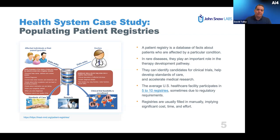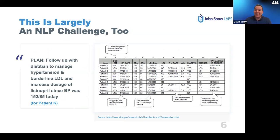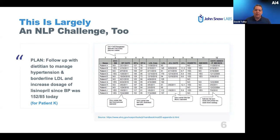This is largely an NLP challenge. Even for clinically simple things — blood pressure, cholesterol, sugar level — you mostly have text like: 'Plan: follow up with dietitian to manage hypertension and borderline LDL and increase dosage.' What we need to extract: whether there's a plan, that there's hypertension, that LDL is borderline so the patient is not yet diagnosed with the disease. You need domain-specific software that understands what borderline LDL means and links measurements to dates.